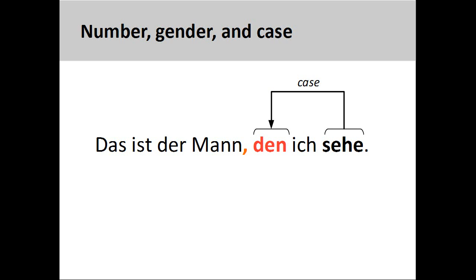Second, the case of the relative pronoun is determined by the function of the pronoun in the relative clause. In the sentence you see on the screen, the relative pronoun "den" is the direct object of the first person singular verb "sehe" (see). The relative pronoun, which we have determined must be masculine and singular, must therefore also be in the accusative case. Although it may be difficult at times to divide your attention between the main and relative clauses to determine the number, gender, and case of the relative pronoun, your ability to do so will increase with practice. The main thing is not to give up and to keep trying.